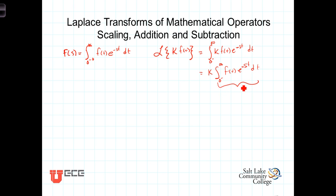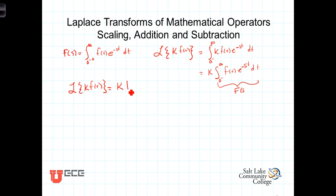By definition, that's just F of s. So we have that the Laplace transform of k f of t is equal to k times the Laplace transform of f of t, which is just k times F of s. So if you have some function of time and you multiply it by k, the Laplace transform of that scaled version is just the Laplace transform of the original function, also scaled by k.